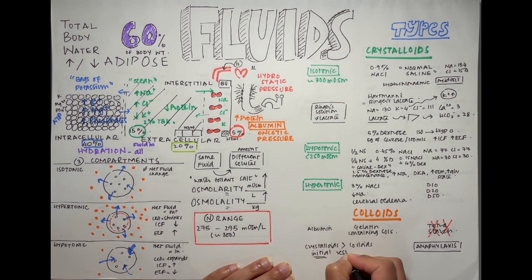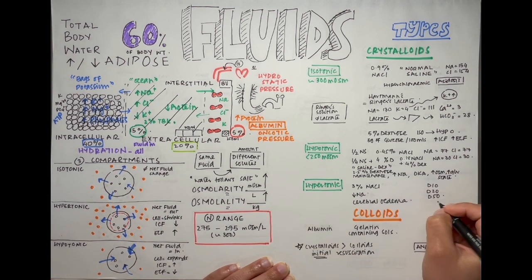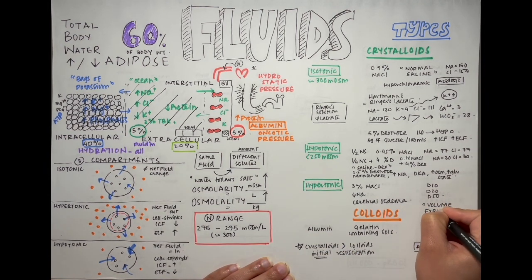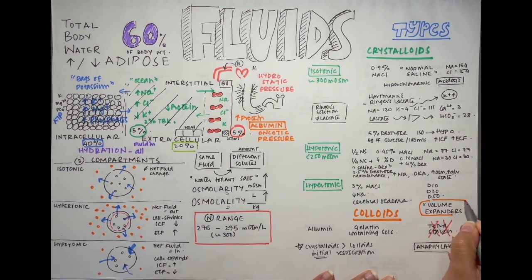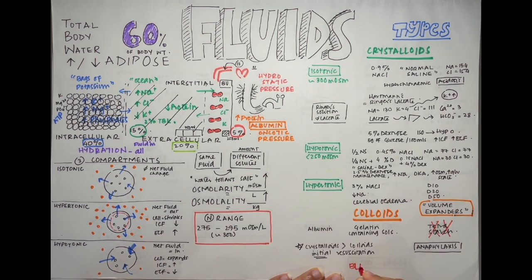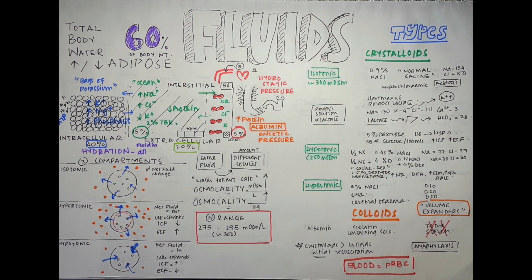Studies have shown that crystalloids are better than colloids in the initial resuscitation anyway, so their routine use is not recommended. Colloids and hypertonic solutions are volume expanders. If you look at the tonicity diagram they'll explain it to you. Blood is another colloid that is safe to give, especially packed red blood cells, and you should always replace blood with blood.